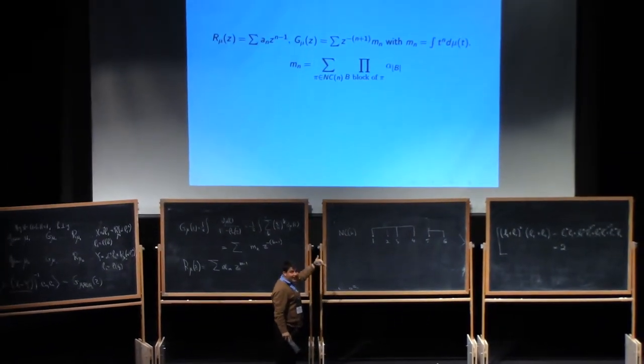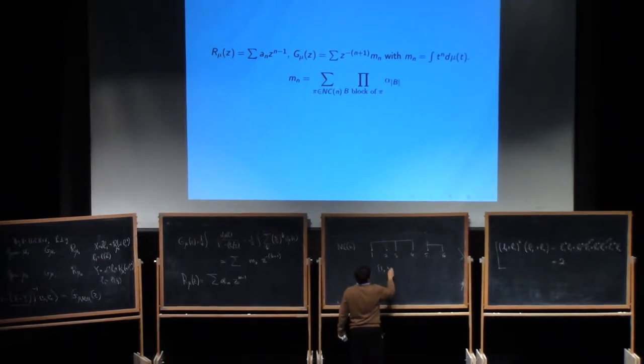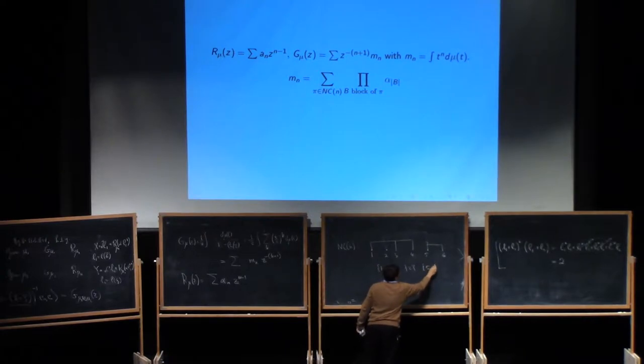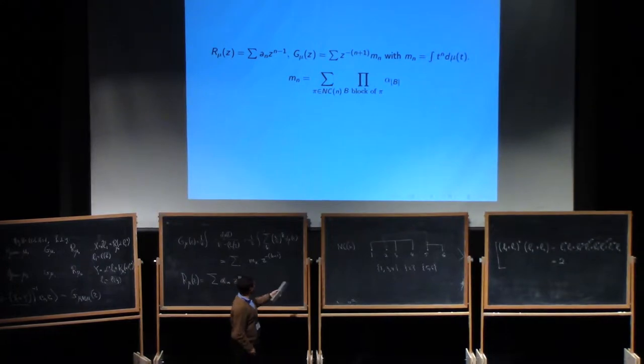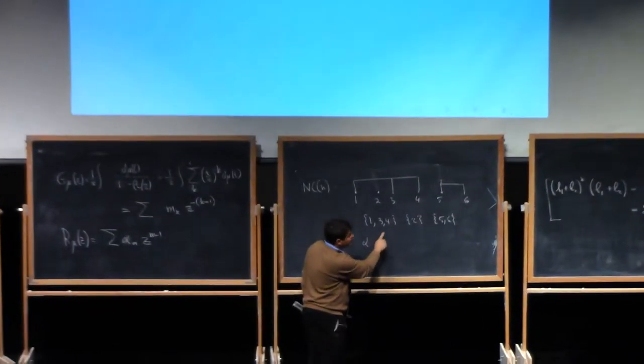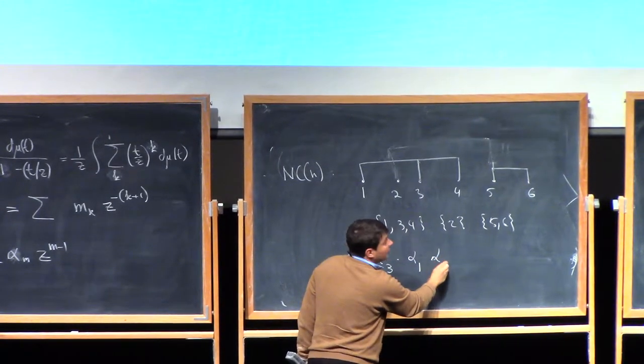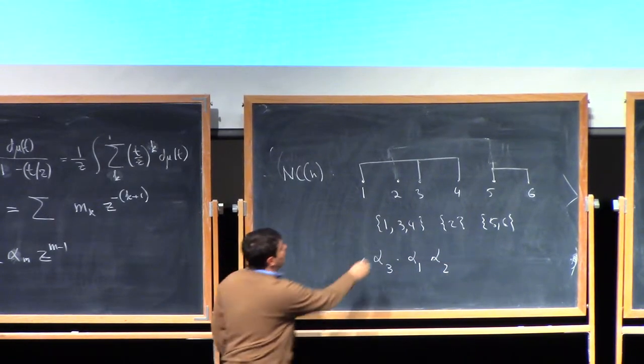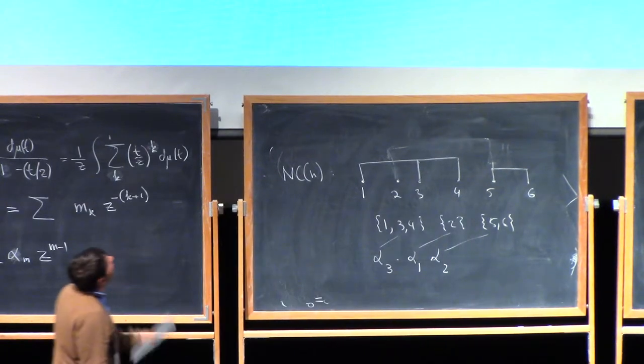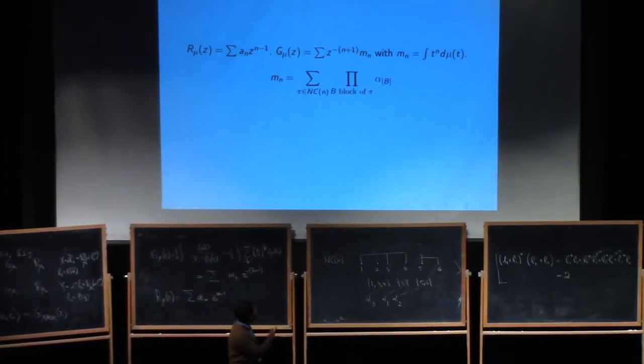And now you are taking the summation over all non-crossing partitions. Then you take the product over the classes of the partition, the blocks of the partitions. So in this case, there would be 3 blocks. The block 1, 3, 4. The block 2. And the block 5, 6. And then you take the product of the cumulants associated to these numbers. Alpha m are called free cumulants. Of the numbers alpha m associated to the sizes of the blocks. So the term in that sum corresponding to this particular partition would be alpha sub the size of the block is 3 times alpha sub 1 times alpha sub 2. From the sizes of these three blocks that we have here.